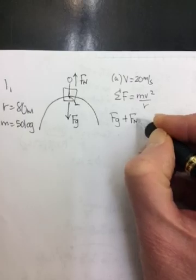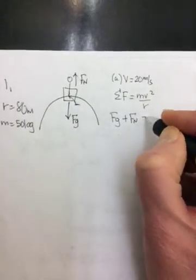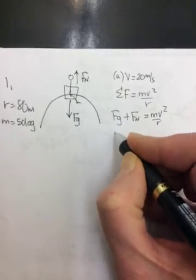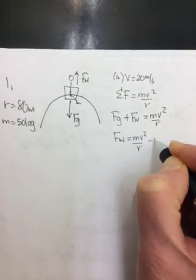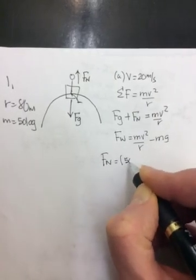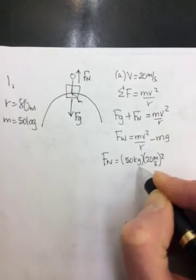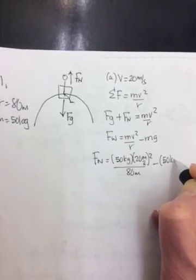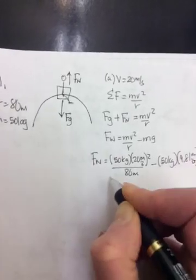Fg is going towards the center of the circle. We know it's positive because towards the center of the circle is positive. Fn is our unknown, so let's leave it as positive. And if it is indeed acting away from the center, it should work out to be negative. So mv squared over r, and we're solving for Fn. So Fn will equal mv squared over r minus mg. And so we put our numbers in, 50 kilograms times 20 meters per second squared divided by 80 meters minus 50 kilograms times 9.81 meters per second squared.